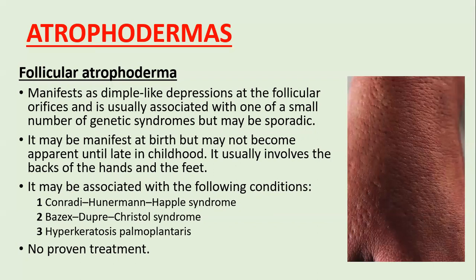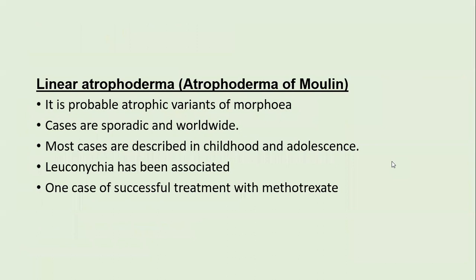Atrophodermas are disorders of cutaneous atrophy with particular appearances. Follicular atrophoderma manifests as dimple-like depressions at follicular orifices, giving the skin an appearance as if pricked by multiple pins. It may manifest at birth or not become apparent until late childhood, usually involving the back of the hands and feet. It is associated with Conradi-Hünermann-Happle syndrome, Bazex-Dupré-Christol syndrome, and hyperkeratosis palmoplantaris. There is no proven treatment.